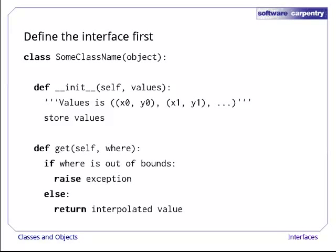Objects of this class will have a method called get that will take an x-axis coordinate, check that it's in range, and if it is, return the corresponding value according to some interpolation rule.